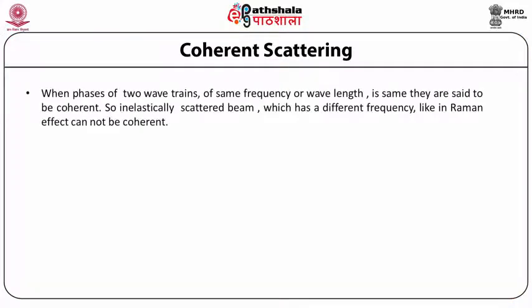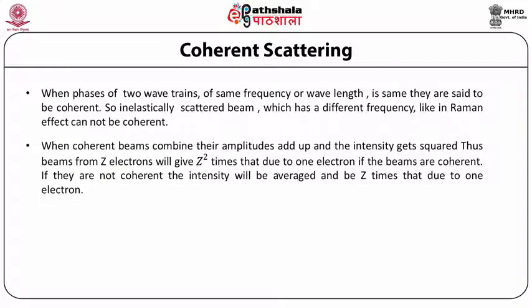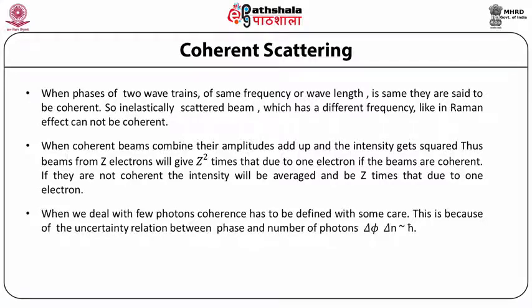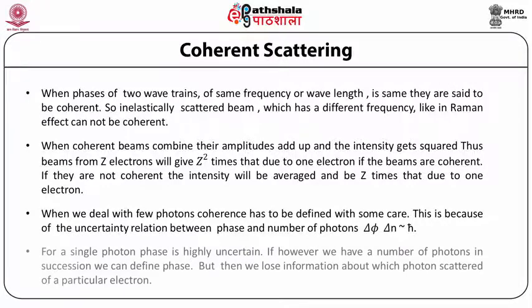Coherent scattering. When the phases of two wave trains of the same frequency or wavelength are the same, they are said to be coherent. An inelastically scattered beam with a different frequency, like in the Raman effect, cannot be coherent. When coherent beams combine, their amplitudes add up and the intensity gets squared, so beams from Z electrons give Z² times that due to one electron if coherent, or Z times if not coherent. When dealing with few photons, coherence must be defined with care, because of the uncertainty relation between phase and number of photons: Δφ · Δn ~ ℏ. For a single photon the phase is highly uncertain, and if we have a number of photons in succession we cannot define the phase, but then we lose information about which photon scattered a particular electron.